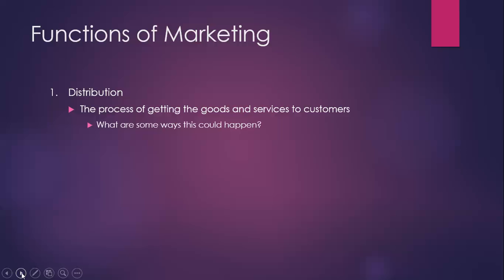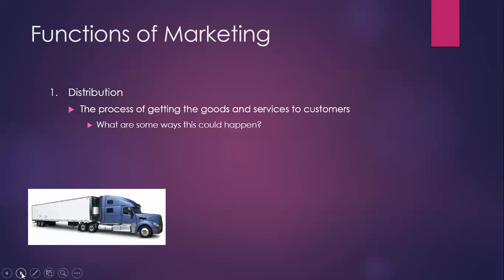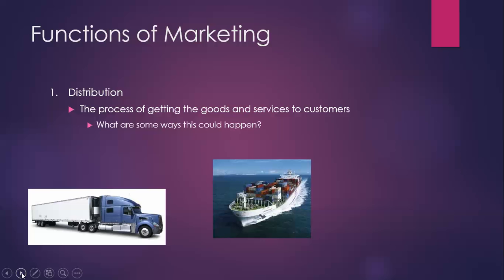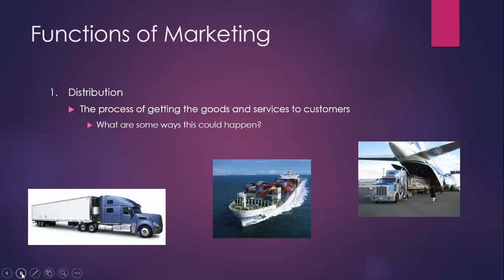How can you get your product from your warehouse or another country where it's manufactured to your customers? Generally speaking, there are lots of different ways. Shipping through semi-truck is one of them. Oftentimes many of our goods are made in China, shipped over in enormous crates and brought to customers through train and trucking. And of course there's air travel as well — a lot of cargo planes. Most of the flights that happen around the world are cargo flights.